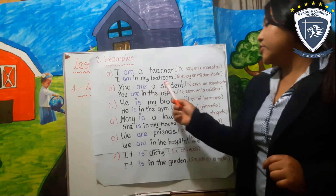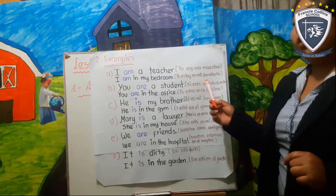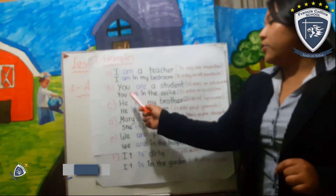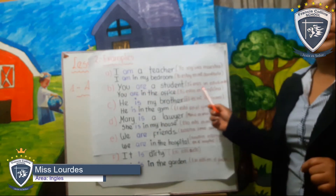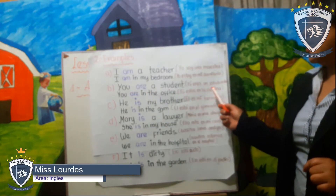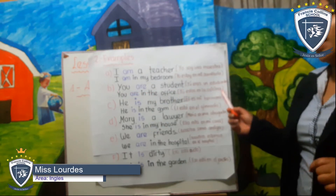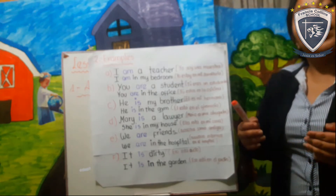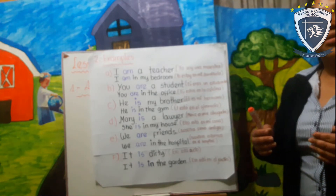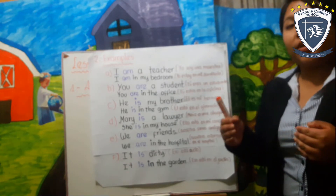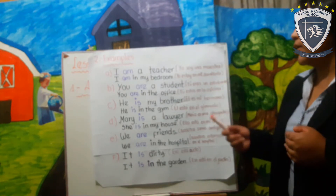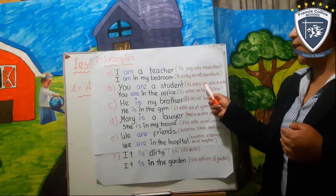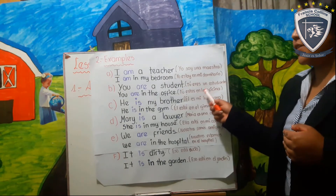You are a student — tú eres un estudiante. You are in the office — tú estás en la oficina. Como pueden observar, estamos hablando del verbo to be, estamos hablando de ser o estar. En este caso: tú eres, tú estás.